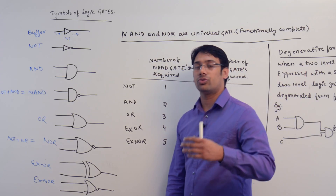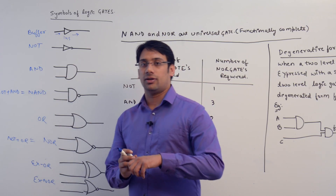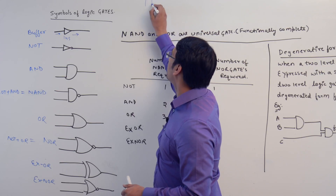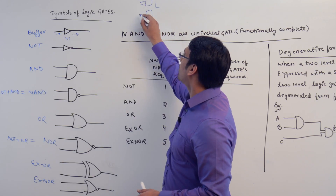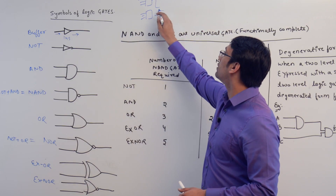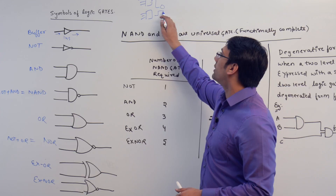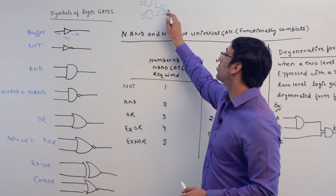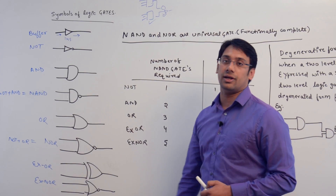Sometimes what happens is if you want to manage synchronization between various circuits — maybe there is a circuit implemented on one side and another circuit on the other side — if you are getting some delay in output from one side and the other output is faster, then you can use a buffer gate to create a delay in the circuit.